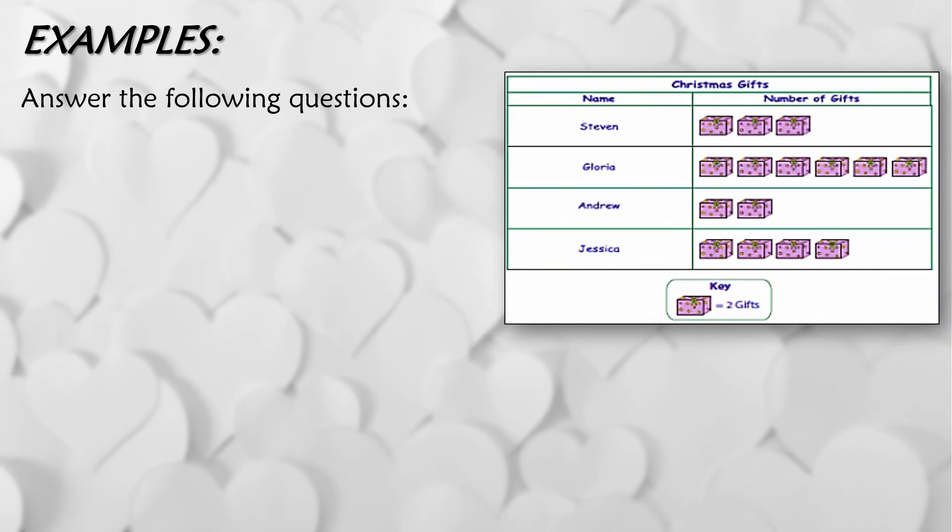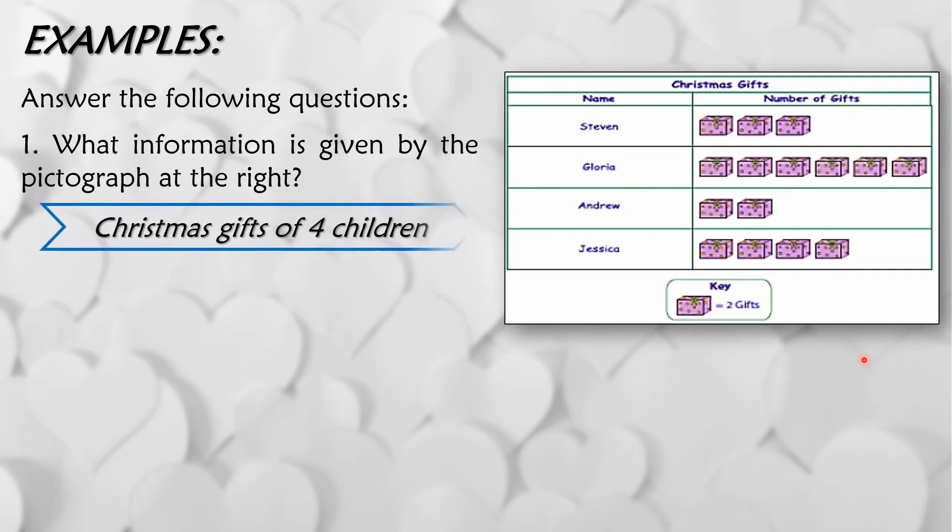Second example, again, we have to answer the following questions using this given graph. So since meron given ng mga pictures na kung saan ang isang picture or drawing ng gift ay katumbas ng dalawang gifts. Ito ay halimbawa ng pictograph dahil gumamit ng mga pictures para i-represent ang number of gifts. Number one question, what information is given by the pictograph at the right? So the answer is Christmas gifts of four children since meron tayong apat na children na binigyan ng mga regalo.